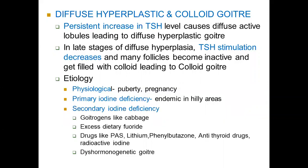Another rare cause is hormonal genetic goiter, where there is enzymatic deficiency due to genetic factors. Persistent increase in thyroid stimulating hormone (TSH) is the reason for diffuse activity of all the lobules of the thyroid gland, resulting in diffuse hyperplastic goiter. When TSH stimulation later decreases, most follicles become inactive and get filled with colloid, resulting in colloid goiter.